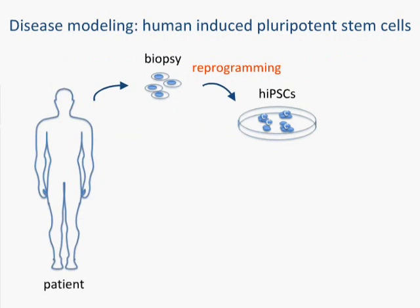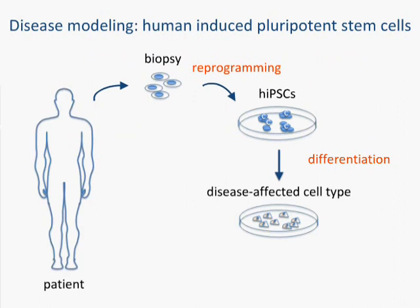This begins by identifying patients, getting a biopsy or a source of somatic tissue, and then reprogramming those cells into an induced pluripotent stem cell. This is followed by differentiation of those cells into what many people would think might be the disease-affected cell type, and then phenotyping those cells to try to uncover the molecular causes of a particular disease.